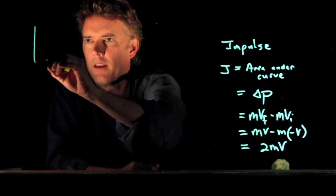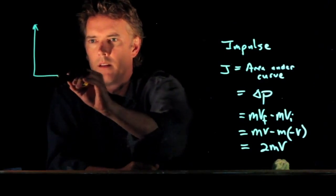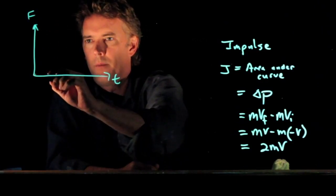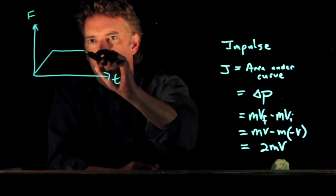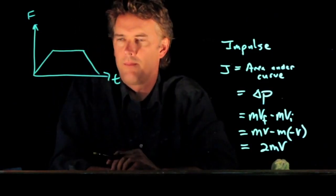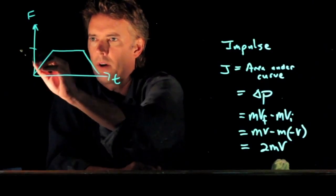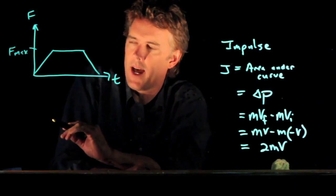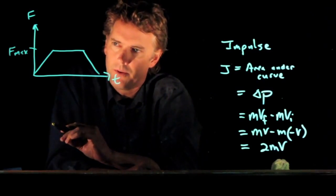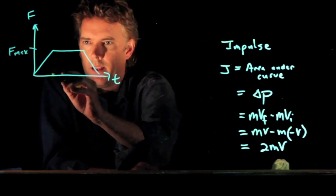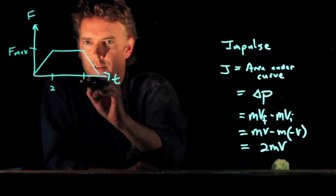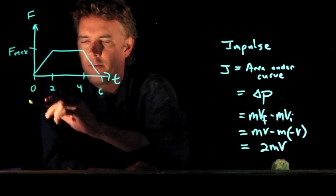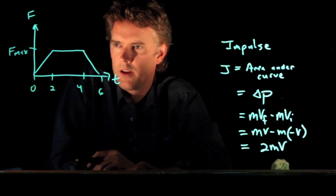So let's plot this again. Here is F. And we're going to say that it does this sort of shape. And this is what we're calling F_max. And let's say we want to figure out what that F_max is equal to. This is 2, this is 4, this is 6, this is 0 seconds.